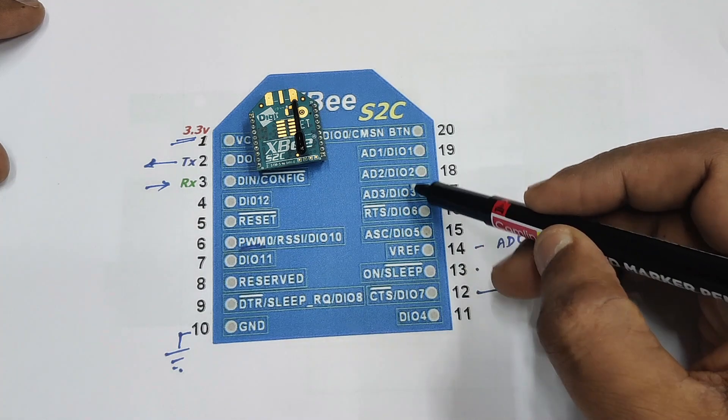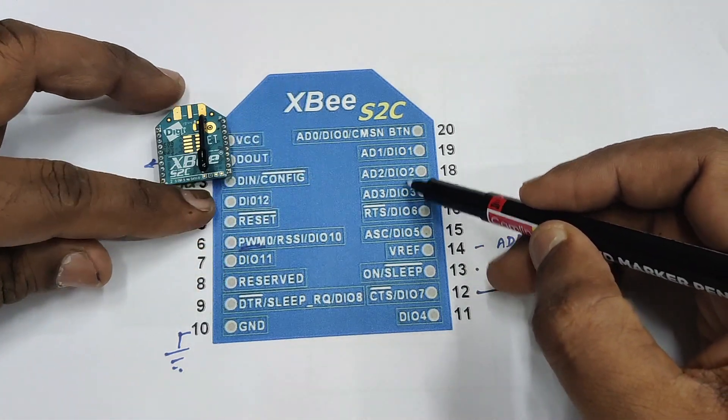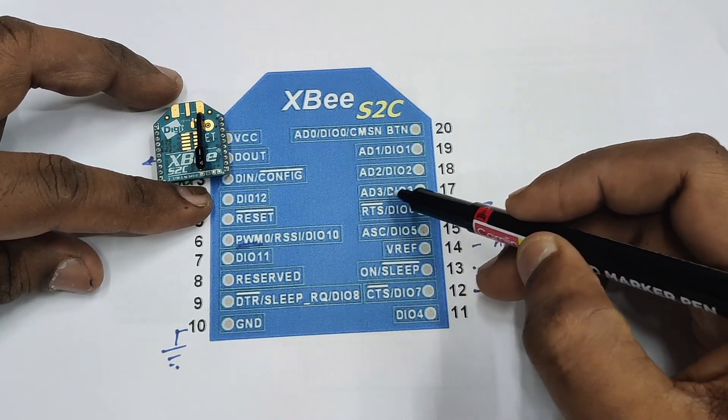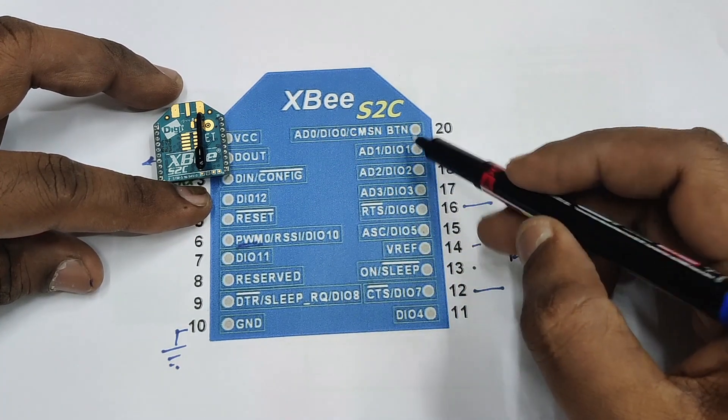Pin 17 to 20 is data IO: DAO 3, 2, 1 and 0, also analog inputs AD3, AD2, AD1 and AD0.